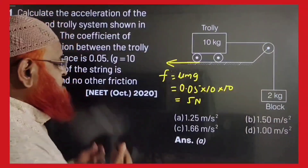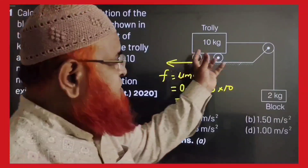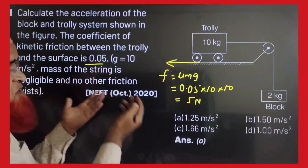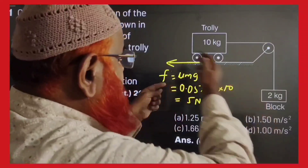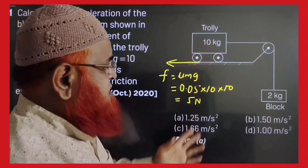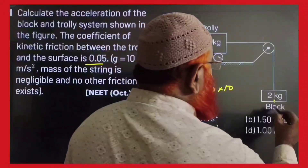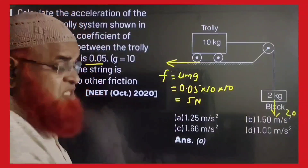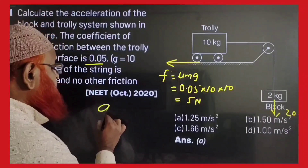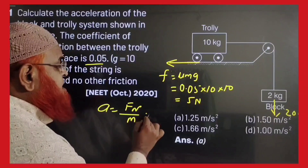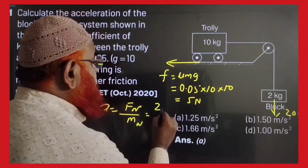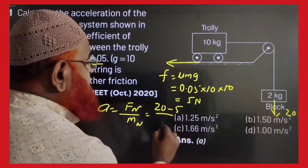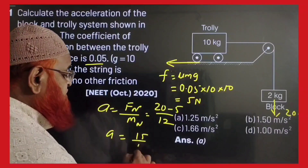This is a previous year NEET question asked in 2020. It asks to find out the acceleration of a trolley where the trolley is having a friction force because the coefficient of friction is given as 0.05. Friction force is μMG which is 5N. 2kg means 20N acting downwards. Acceleration is net force by net mass. Net force: dominating force is 20 and friction force is 15. Difference divided by total mass gives 15 by 12, which is 1.25 m/s².